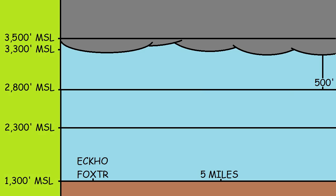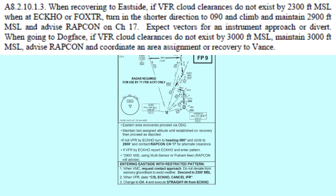When 5 miles from Echo or Foxtrot, you should be at 2,800 feet MSL, which is the ATC minimum vectoring altitude near the radar release points, to give you the best shot of being 500 feet or more below the clouds. In Scenario 1, if you are still in the clouds at 2,800 feet MSL, turn to a 090 heading, climb to 2,900 feet MSL, and tell Approach or Arrival you did not break out of the clouds, and request an instrument approach or to divert to your alternate airport based on the weather and your fuel state.